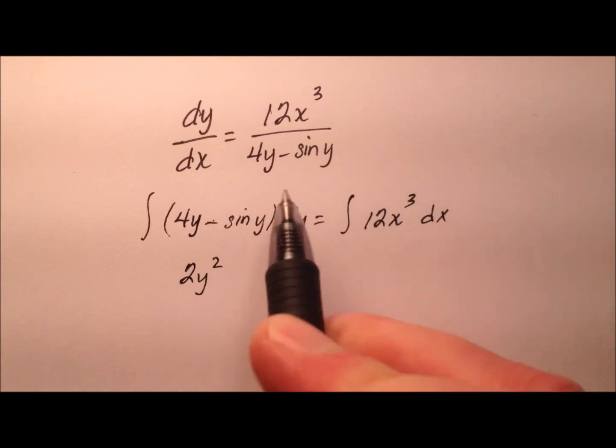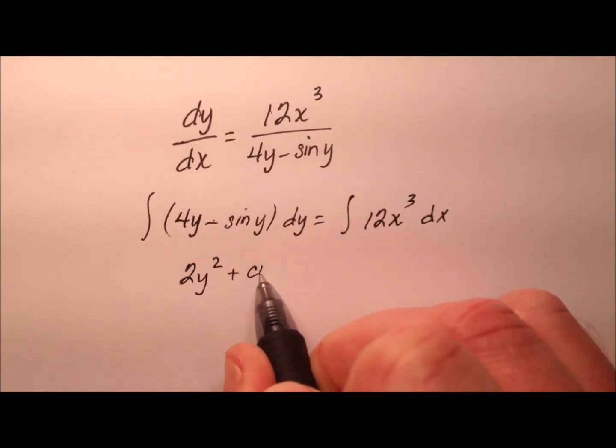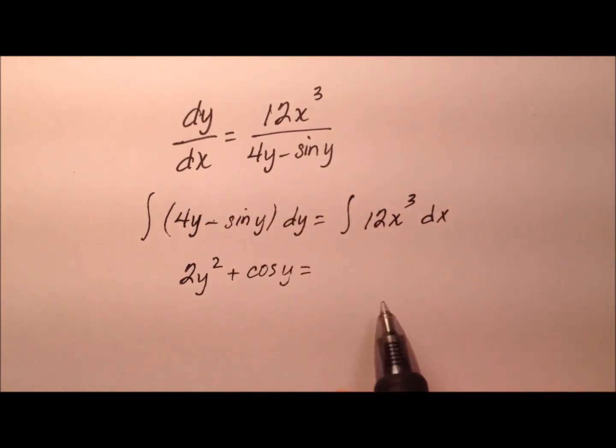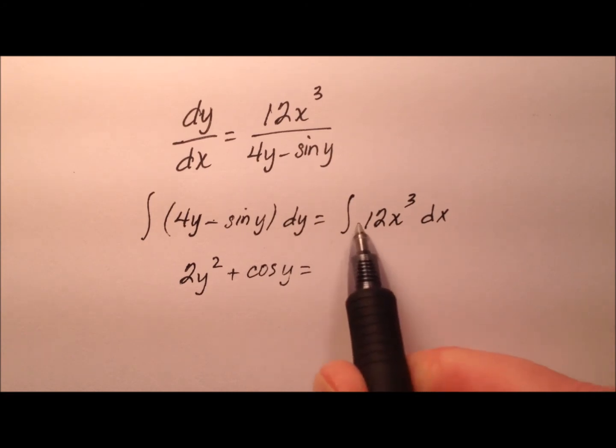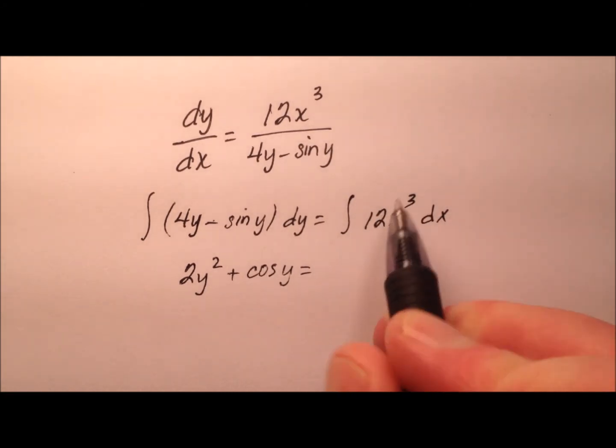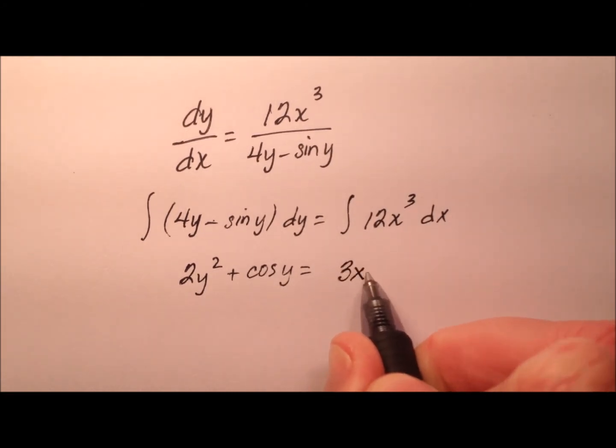The integral of negative sine of y will be positive cosine of y and then that will equal the integral of 12x cubed so that will be 3x to the fourth plus c.